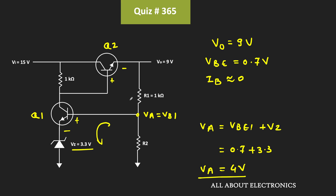Now, since the base current of both transistors is negligible, this current is almost negligible, and this current will be equal to IE2. Since the base current Ib is negligible, we can say that the current through resistors R1 and R2 is equal to IE2. Since the same current is flowing through both resistors, we can apply the voltage divider rule.